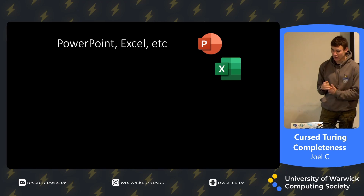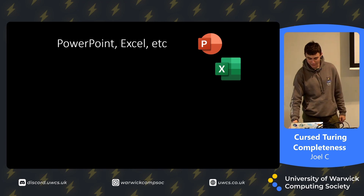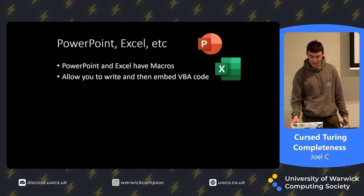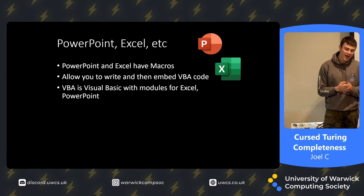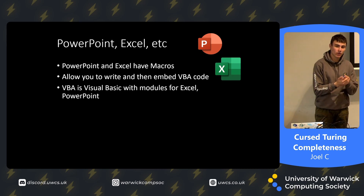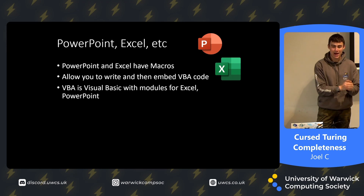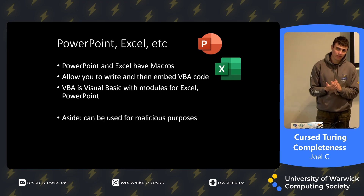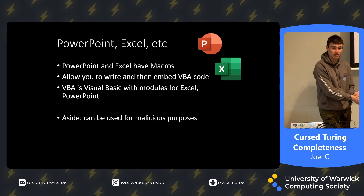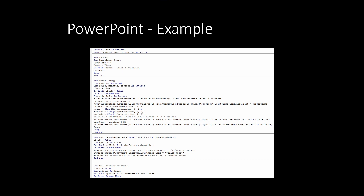Next up we have PowerPoint, Excel, and various other Microsoft products. These have what are called macros — little bits of embedded VBA code you can put into Word documents, PowerPoint presentations, etc. VBA is Visual Basic with specific modules to interface with PowerPoint and Word. As an aside, this is used a lot for malicious purposes — you email someone a Word document with a macro that runs when it's opened. Macros can be used for good though; in my previous lightning talk I used code to take my computer's clock and convert it to a Unix timestamp.